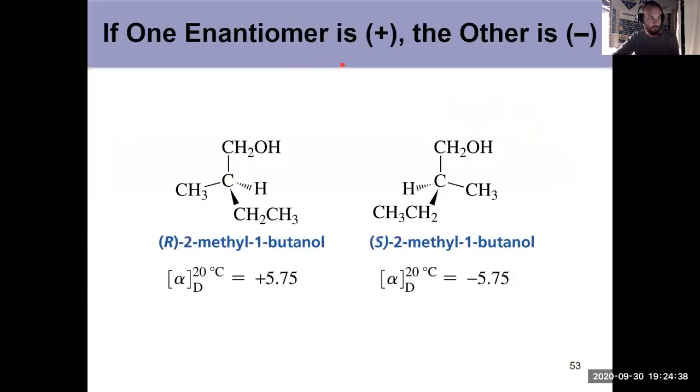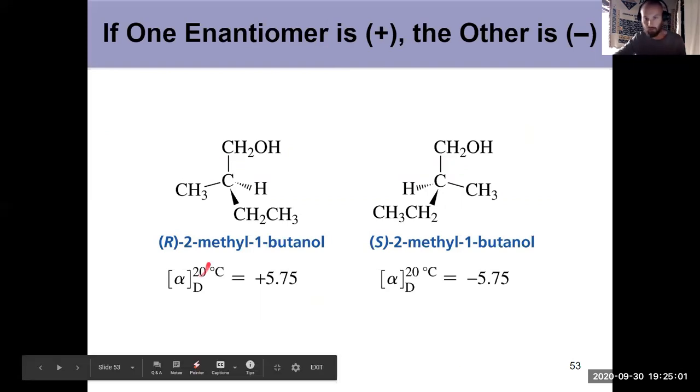And then this is what the readout would look like. One is R, goes clockwise, plus 5.75. That's called the observed rotation. And then the opposite enantiomer is the exact reading, but negative. And again, depends on the temperature, the concentration, the tube length, and the wavelength being used. Notice the temperature notation there.